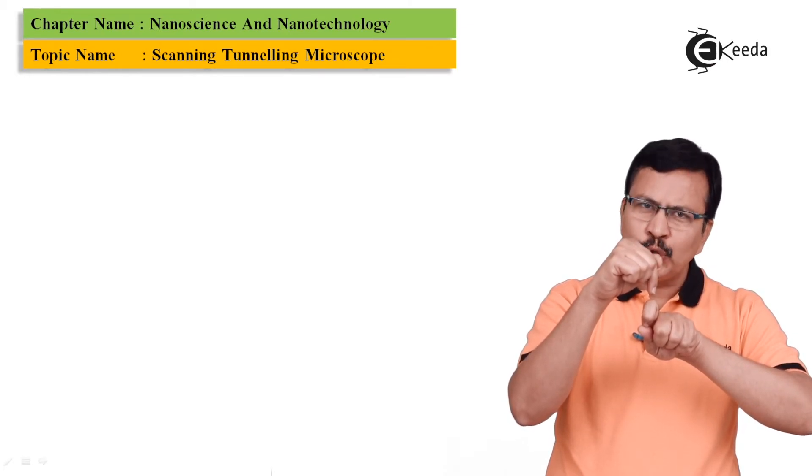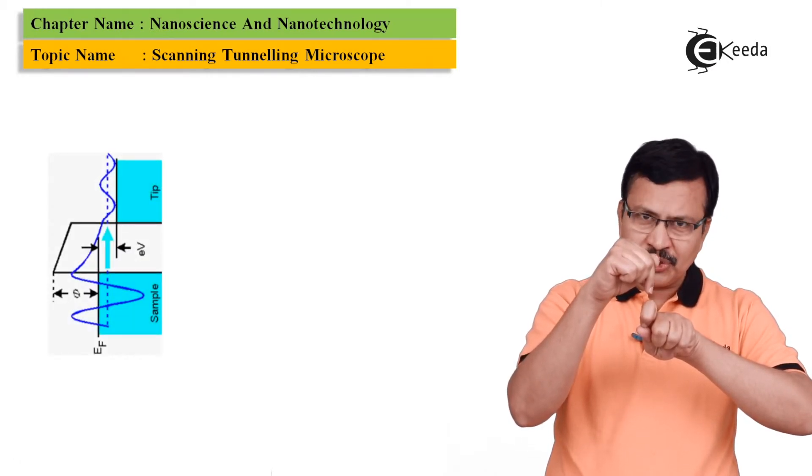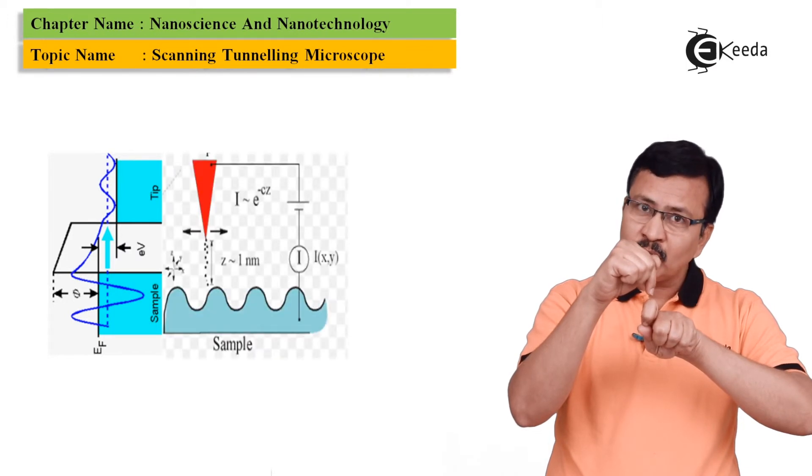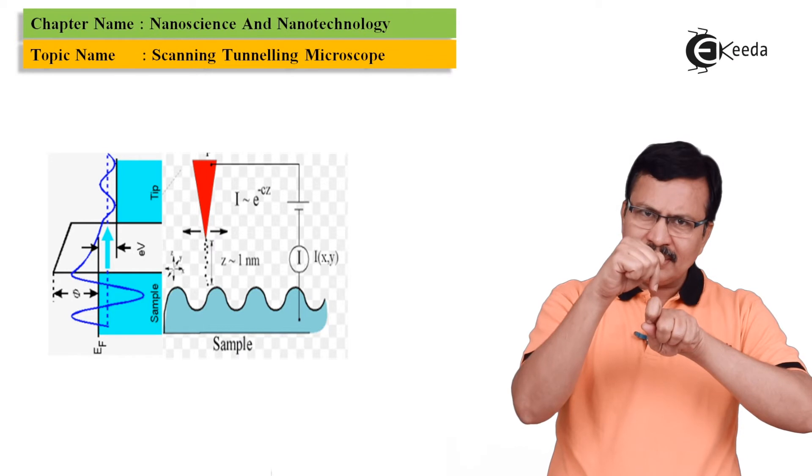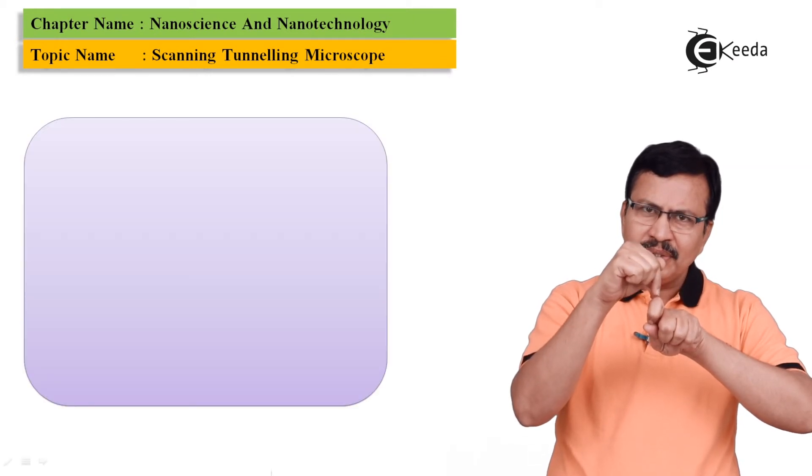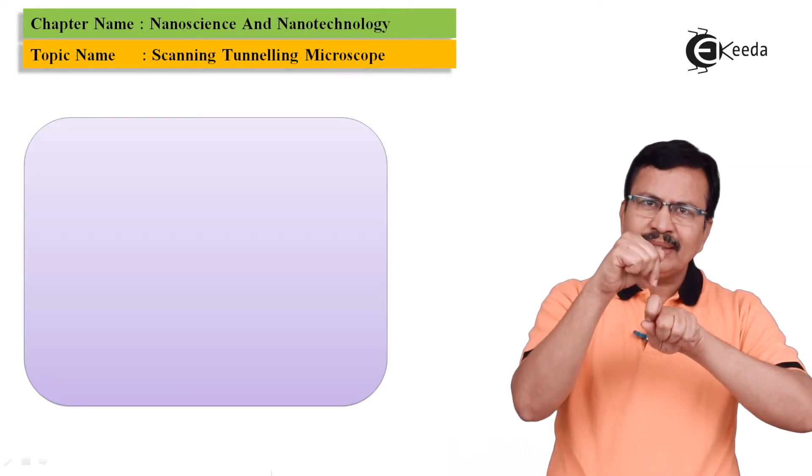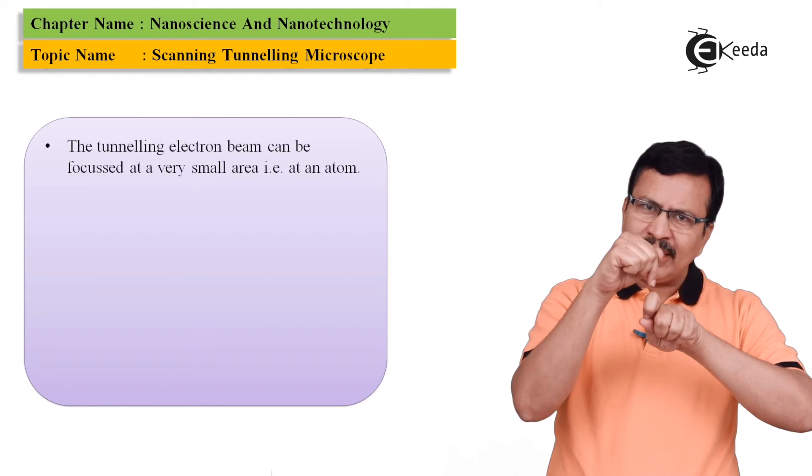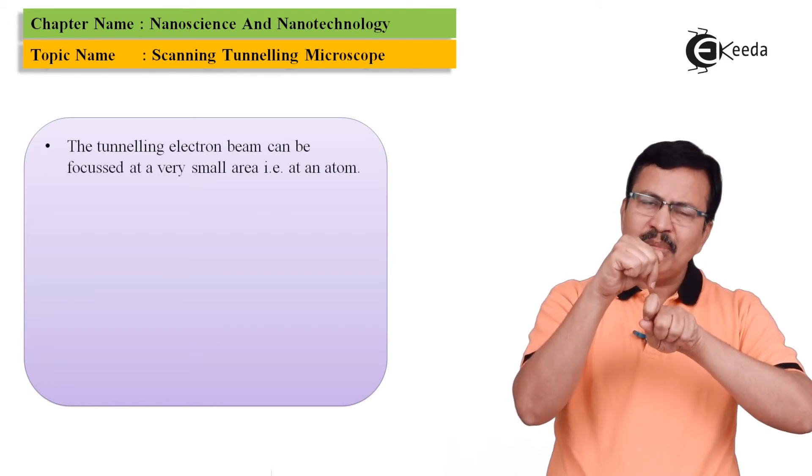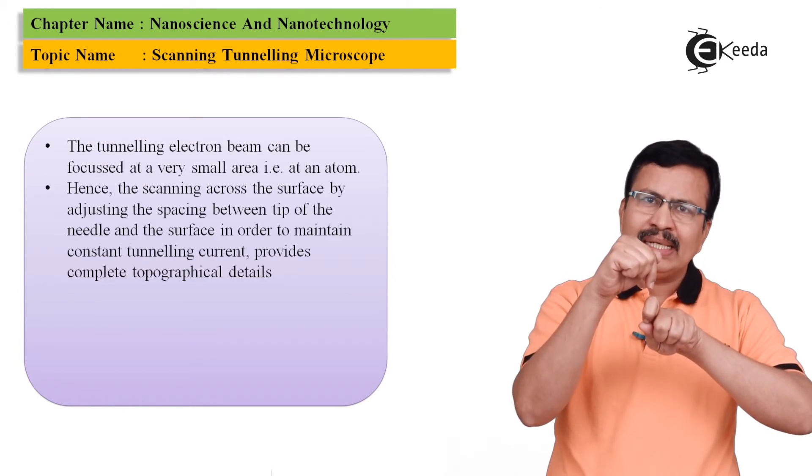Remember I told you that the tunneling current is dependent upon the position, the voltage and the local density of states. So in this case since there is a bulge the tip will automatically move up so as to maintain the same magnitude of the tunneling current.